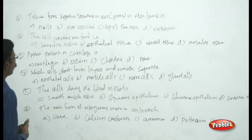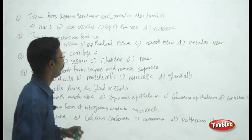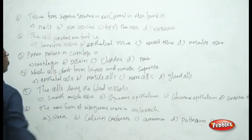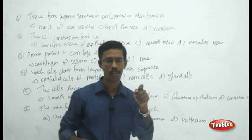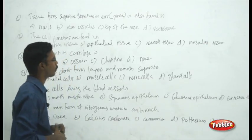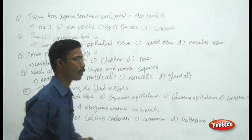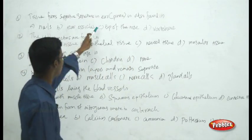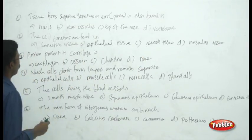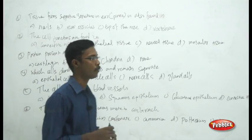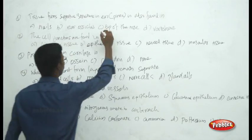First question: which tissue forms the supportive structure in the pinna — the external ear? You need to know which tissue is present in the pinna. The cartilaginous tissue — specifically fibrous yellow cartilaginous tissue — is present in the ear or pinna. The question asks where else this tissue is found. Choices are nails, ear ossicles, tip of the nose, and vertebrae. The answer is the tip of the nose, where cartilage is also present.